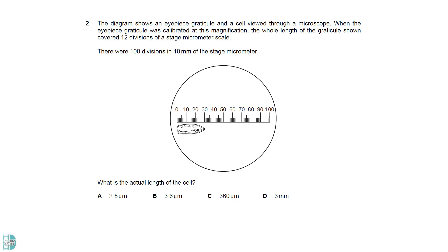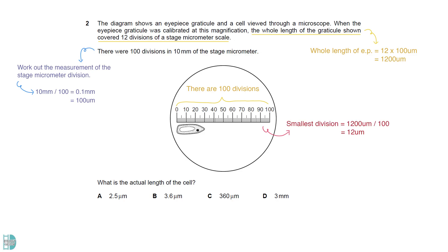The first thing we have to do is to work out the measurement of the stage micrometer divisions. 10 millimeters divided by 100 gives us 0.1 millimeters. We can convert it to micrometers by multiplying 1000. The whole eyepiece covered 12 divisions of the stage micrometer scale, so its whole length is 12 times 100 micrometers. There are 100 divisions on the eyepiece. The smallest division of the eyepiece graticule is 12 micrometers. The cell measured 30 eyepiece graticules, so its length is 30 times 12 micrometers.